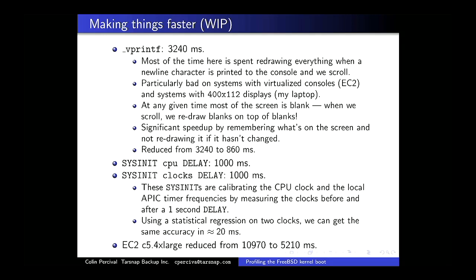On my laptop it's a different issue — I have a framebuffer, running in video mode rendering characters, at 3200x1800 resolution. Each pixel needs to be redrawn with the appropriate part of the new character when we scroll. Most of the screen is blank; my display is 400 characters wide but the kernel log doesn't go that far across, so most scrolling rewrites blank characters on top of blank characters. I have a work in progress that fixes this — done for EC2, it speeds it down to under one second, with similar speedups on my laptop.